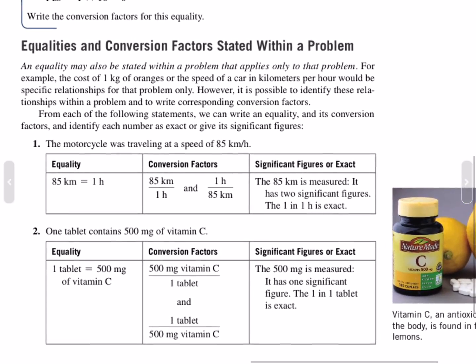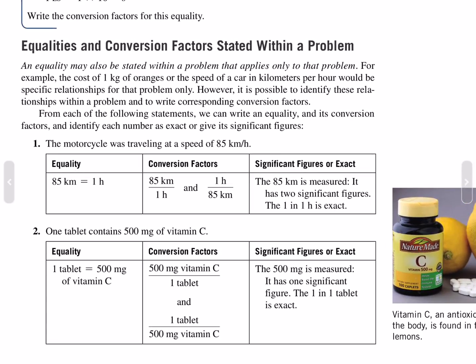Equalities and conversion factors stated within a problem. An equality may be stated within a problem that applies only to that problem — for example, the cost of one kilogram of oranges or the speed of a car in kilometers per hour. It is possible to identify these relationships and write corresponding conversion factors. For instance, 85 kilometers per hour gives conversion factors of 85 km per hour or 1 hour per 85 km; 85 is measured with two significant figures, while 1 (hour) is exact. One tablet of 500 milligrams of vitamin C gives: 500 mg vitamin C per tablet and 1 tablet per 500 mg vitamin C.